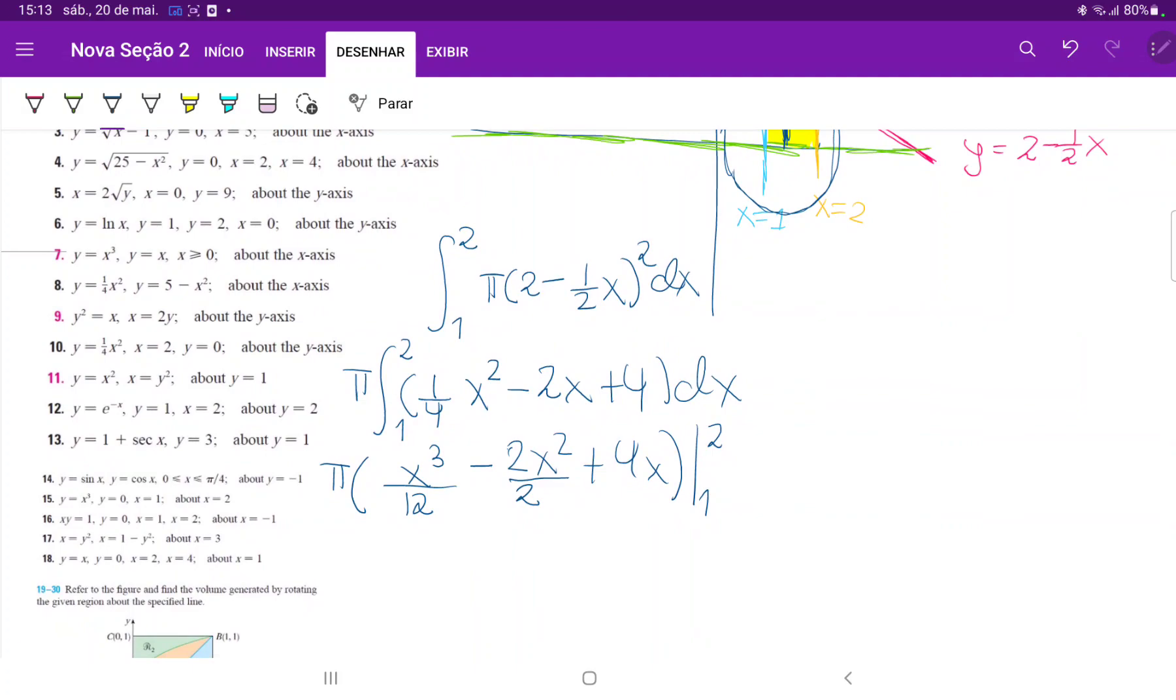All right, so let's plug in our boundaries so that we can evaluate this. So this is pi times the upper boundary 2, so 2 to the power of 3 is 8, 8 twelfths minus this 2 and this 2 cancels, so minus 2 squared minus 4 and then plus 4 times 2 plus 8. And then minus the lower boundary, so minus 1 cubed over 12, so minus 1 twelfth. And then this minus minus becomes a plus, so plus 1 squared plus 1 and then minus 4 times 1, so minus 4.